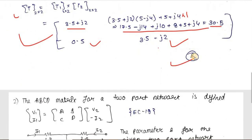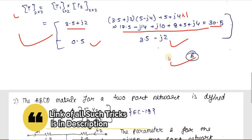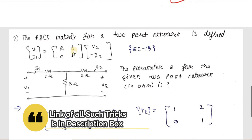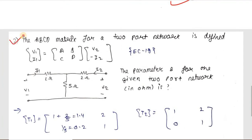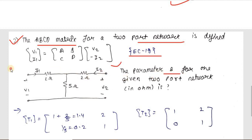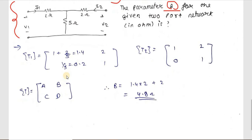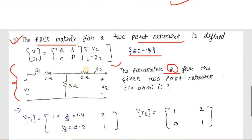That was the technique to solve all ABCD parameter problems very easily within 30 seconds. Now let's apply this trick to another sum — EC 2018. The question defines the ABCD matrix as [V1; I1] = [A B; C D][V2; I2], and we need to find parameter B for the given T-type two-port network.